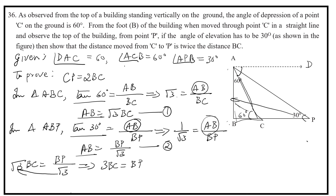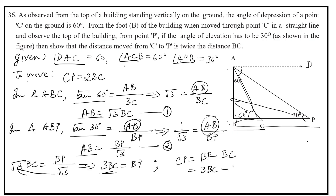Now we want CP. CP equals BP minus BC. BP is 3 BC, so CP equals 3 BC minus BC, which equals 2 BC.